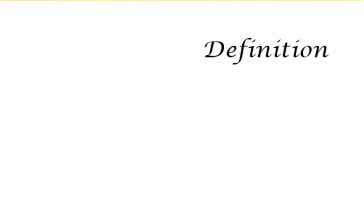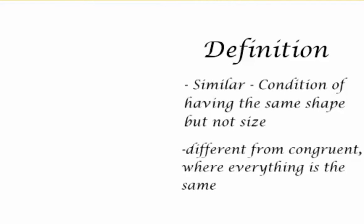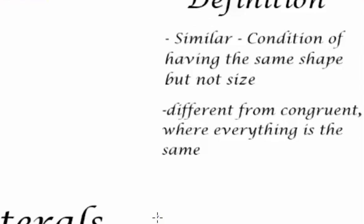Welcome to the lesson on similar quadrilaterals. In this lesson, we will discuss the conditions that make quadrilaterals similar and how we can use similarity to solve problems. By definition, similarity is a condition of having the same shape but not the same size. This is different from congruent where everything is the same.